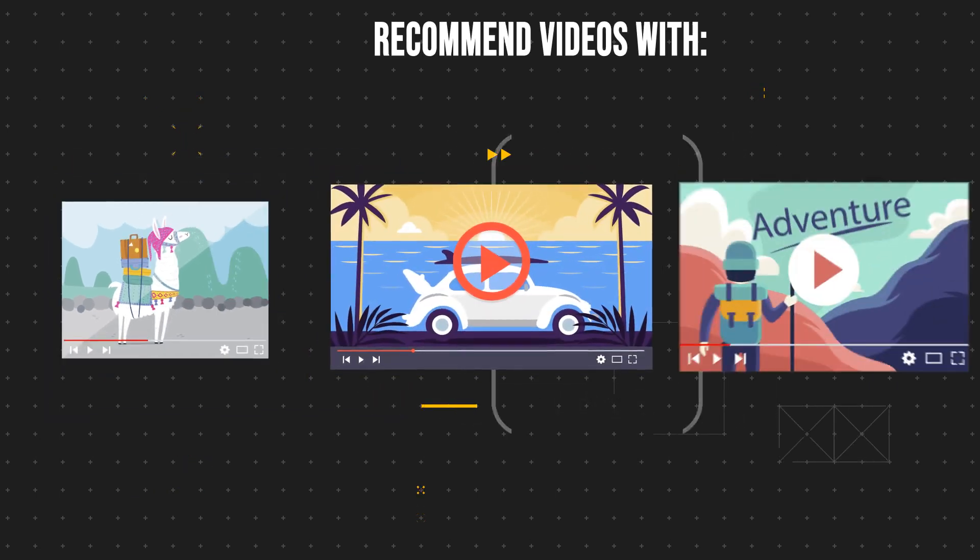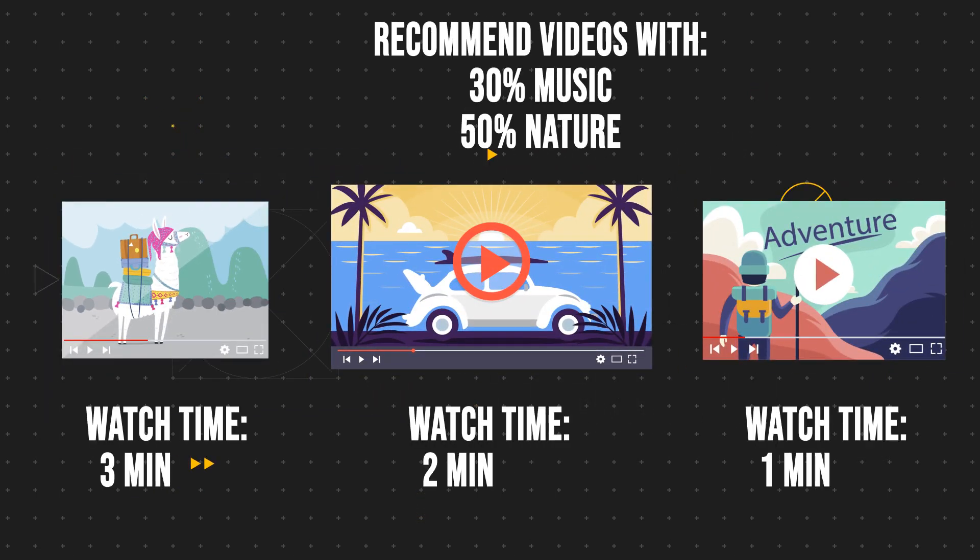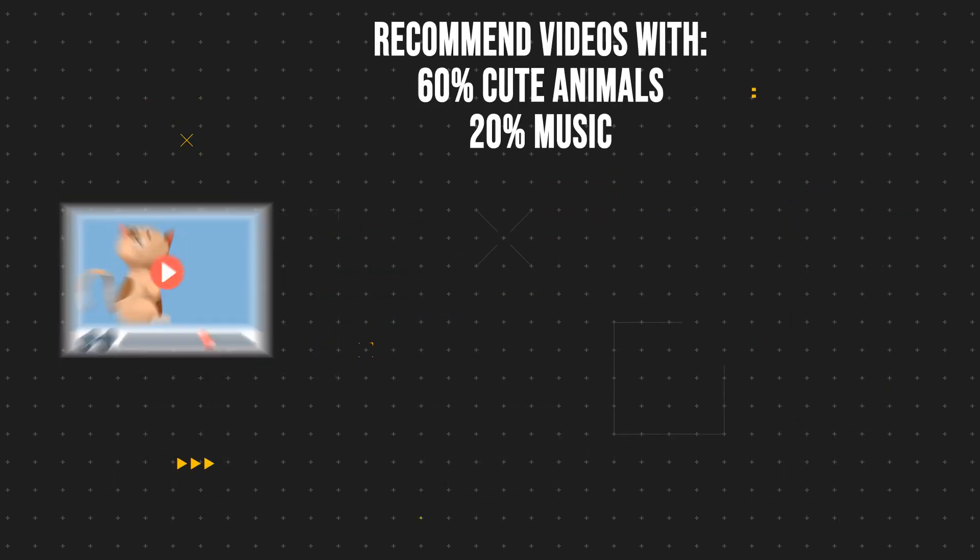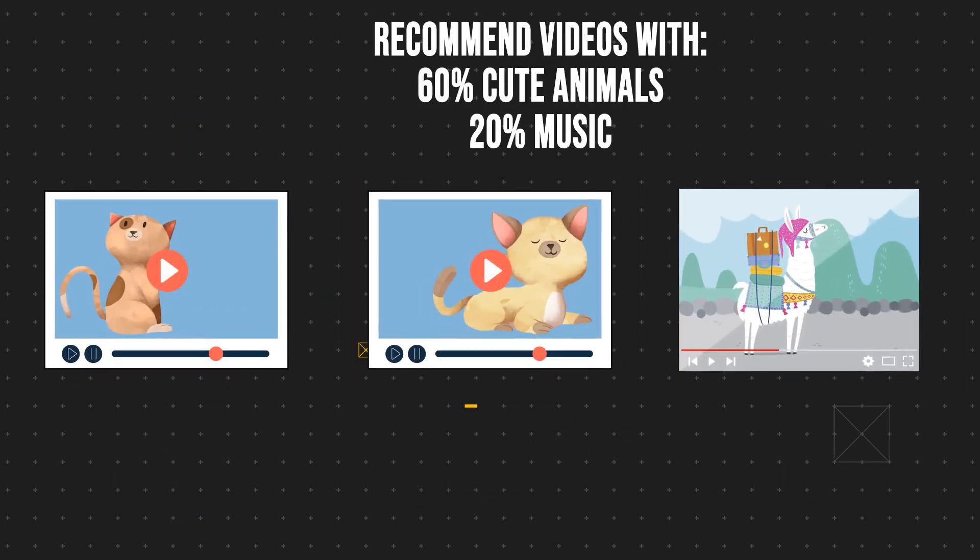Videos with certain characteristics are suggested to different users, and each generates a certain amount of user watch time, which is documented for further analysis. Then the sample characteristics are altered, and another set of videos is suggested.